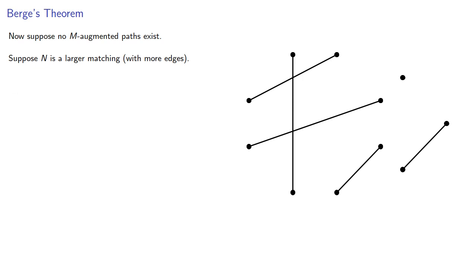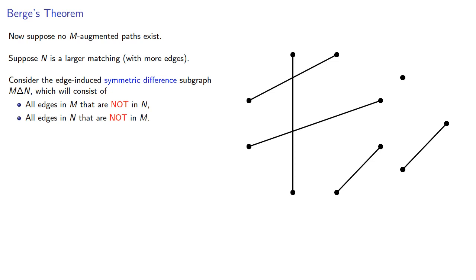We'll consider the edge-induced symmetric difference subgraph M delta N, which will consist of all edges in M that are not in N, and all edges in N that are not in M. In other words, it's all the edges in N and M together, except we're going to omit any that were common in both.